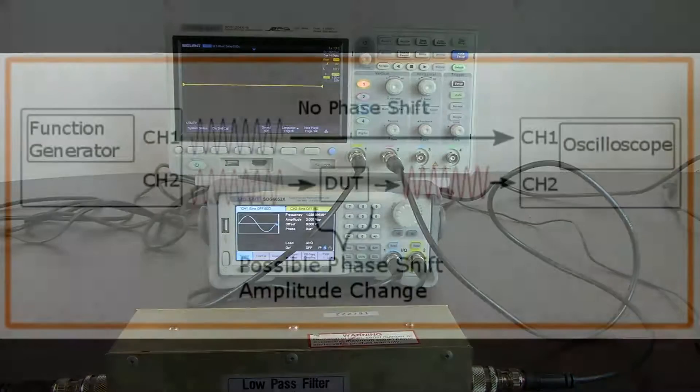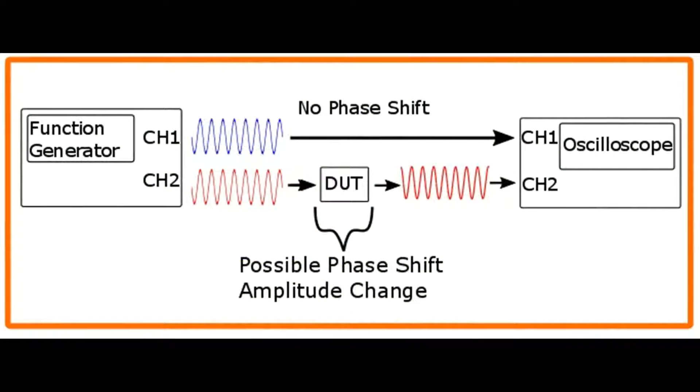So go back to the diagram that we originally had shown. We want to have the source channel look identical to our channel going through the device under test at the beginning, but once it passes through the device under test, then we'll be measuring it with the scope and we can see what the effects are.